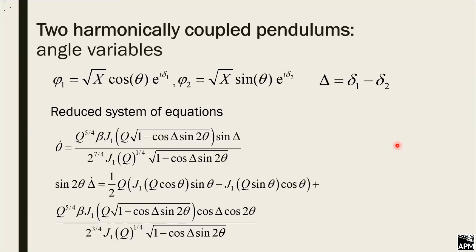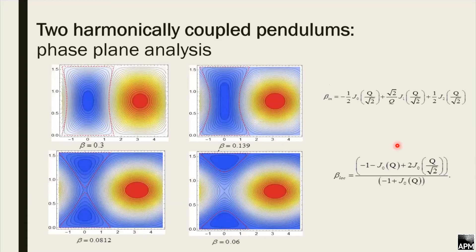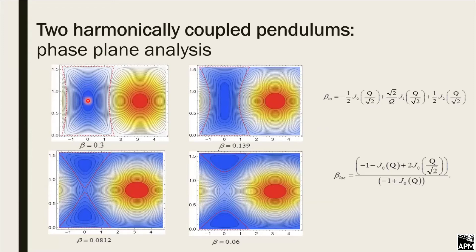The system can be presented on a phase plane. On the vertical axis is the variable theta, which represents the relation between the excitation levels of the two pendula, and on the horizontal axis is delta, the phase shift between the two pendula. The stationary points correspond to the two nonlinear normal modes — in-phase and out-of-phase. The red dashed line is the limiting phase trajectory, corresponding to the maximum possible energy exchange between the two pendula. When theta equals zero, all the energy is on one pendulum; when theta equals pi divided by two, all energy is on the other.